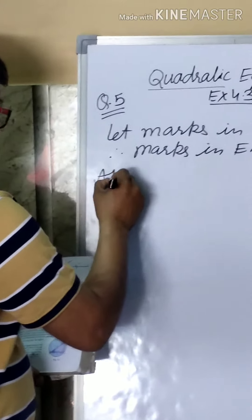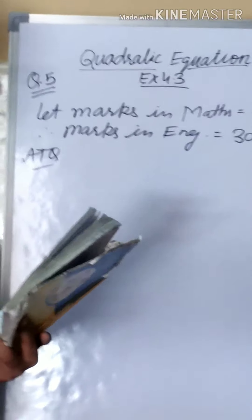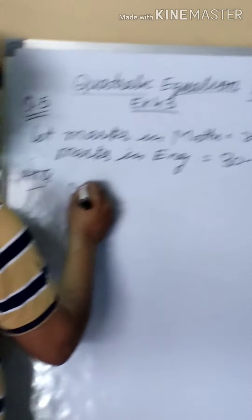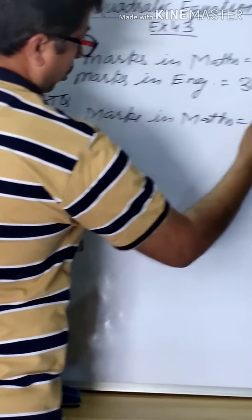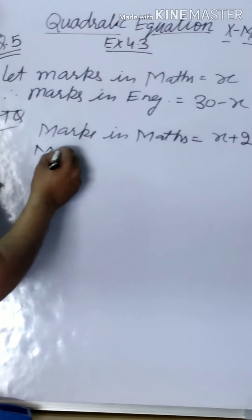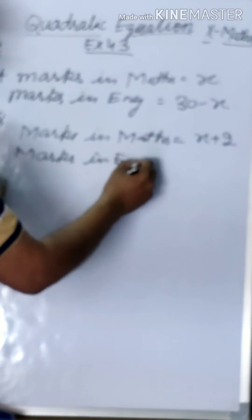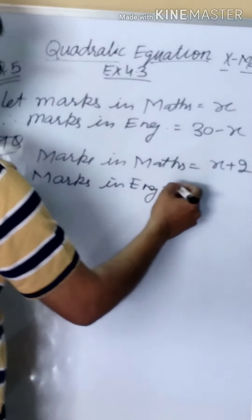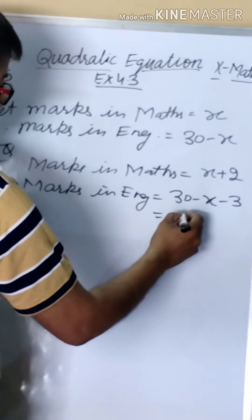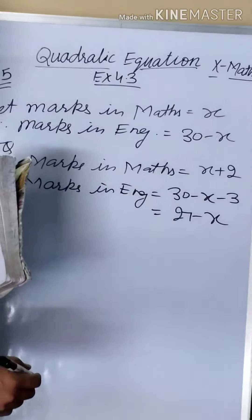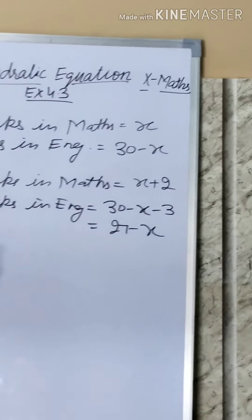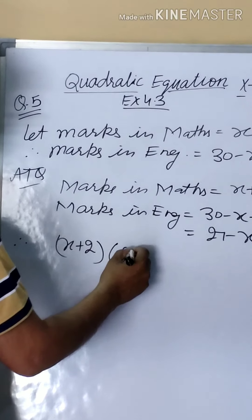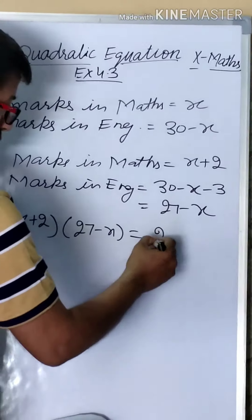Then, according to the question, had she got two marks more in Mathematics, marks in Mathematics would be x + 2. And marks in English, three marks less, would be 30 - x - 3, which is 27 - x. So according to this, the product of marks is 210. Therefore, (x + 2)(27 - x) = 210.